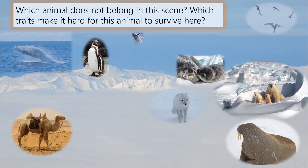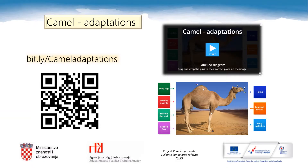Now take a good look at this picture. Which animal does not belong in this scene? Of course — it's a camel. It definitely doesn't belong to the polar region. And which traits make it hard for this animal to survive here? Please copy this link bit.ly camel adaptations into your browser or scan this QR code and label the camel's body parts. While labeling, think about how that trait helps the camel to survive in the desert. Good luck, everyone, and enjoy the game.